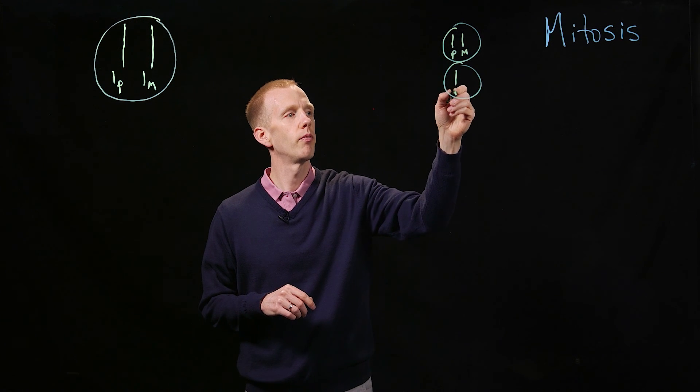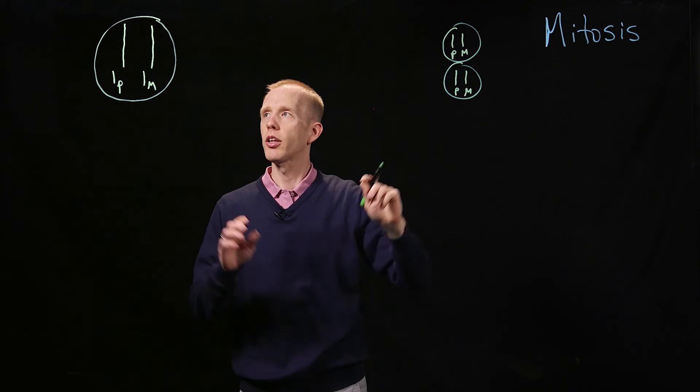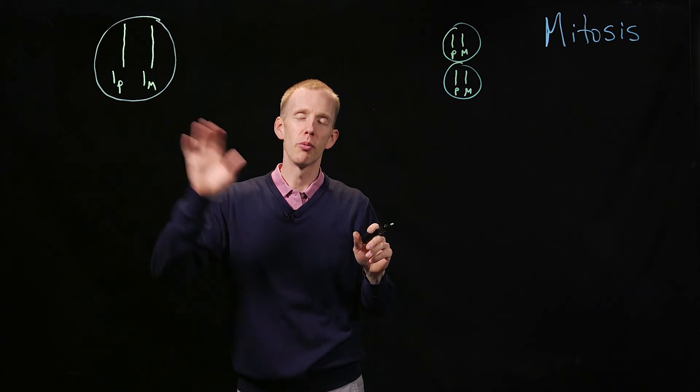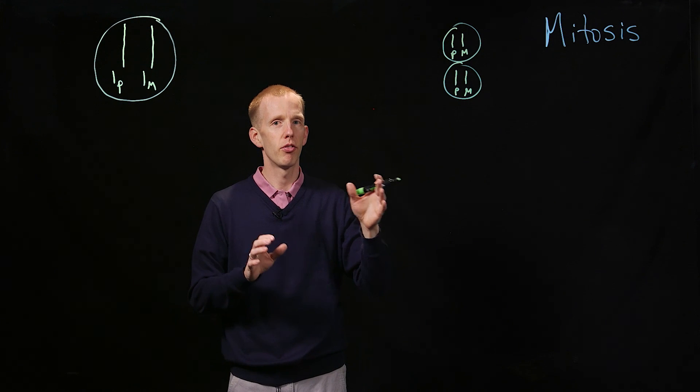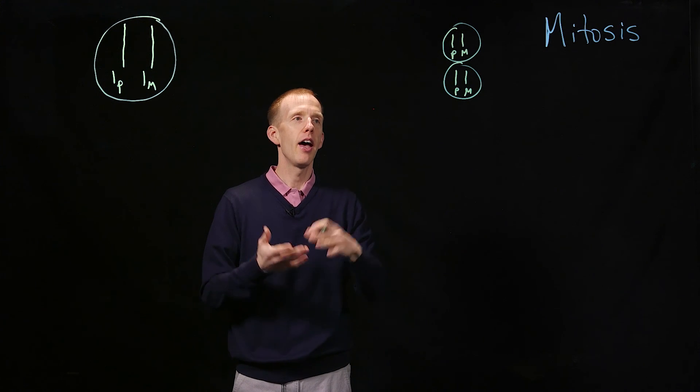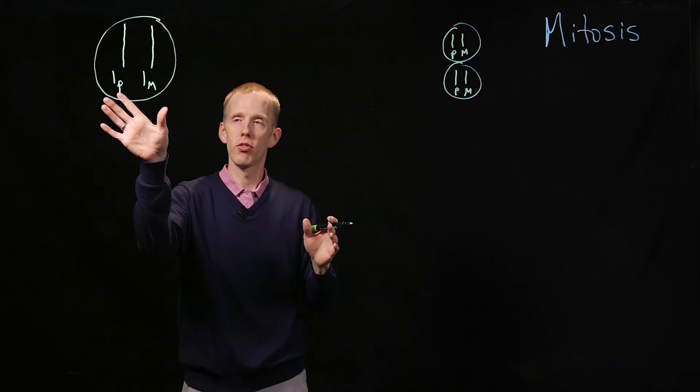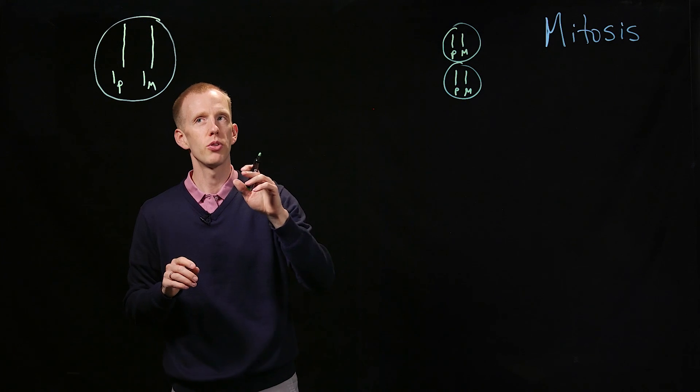One paternal and one maternal, clearly we have to go from two double-stranded molecules of DNA to four, and that's through the process of synthesis of DNA and then the segregation of those chromosomes into two at mitosis.